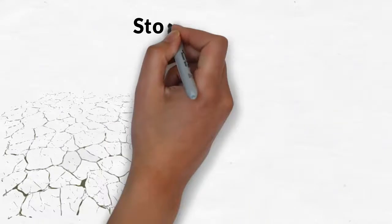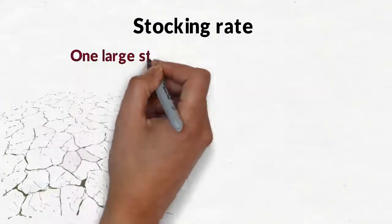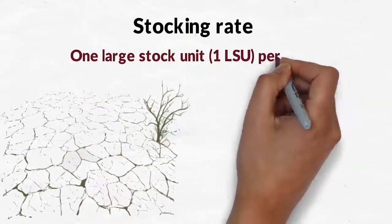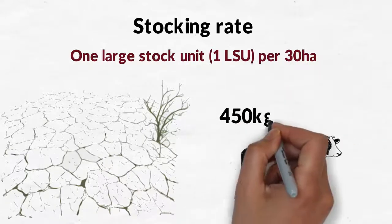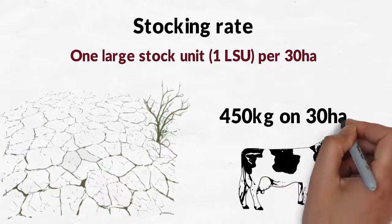In very dry areas, the stocking rate could be as light as one large stock unit per 30 hectare, which means that you could run one head of cattle weighing 450 kg on 30 hectare of the farm's grazing.